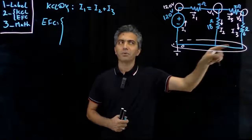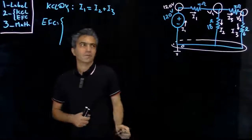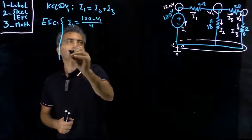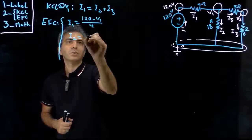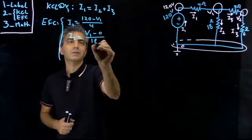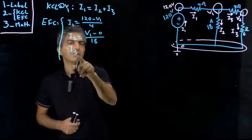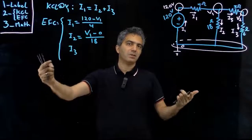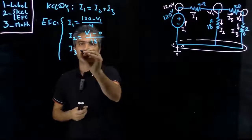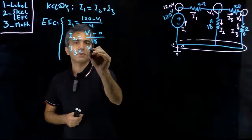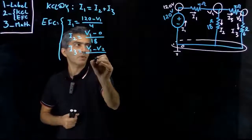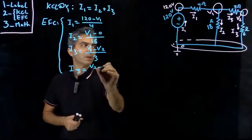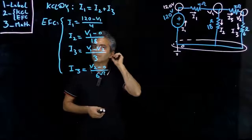Now we count 1, 2, 3, 4, 5 components. The equation for this one is already done. There are four components left to write the equation for. So: I1 is equal to 120 minus V1 over 4. I2 is equal to V1 minus 0 over 18. Notice I'm not writing equations for currents — don't get this confused. It happens that the current comes first, but I'm writing equations for each one of those resistors. That's important to always keep in mind. I3 is equal to V1 minus V2 divided by 3. And finally, I3 is equal to V2 minus 0 divided by 6.